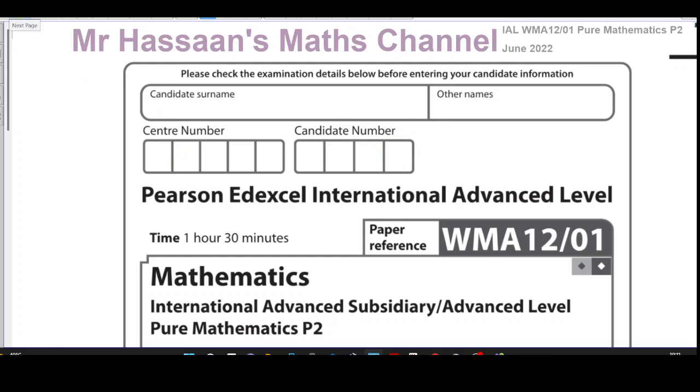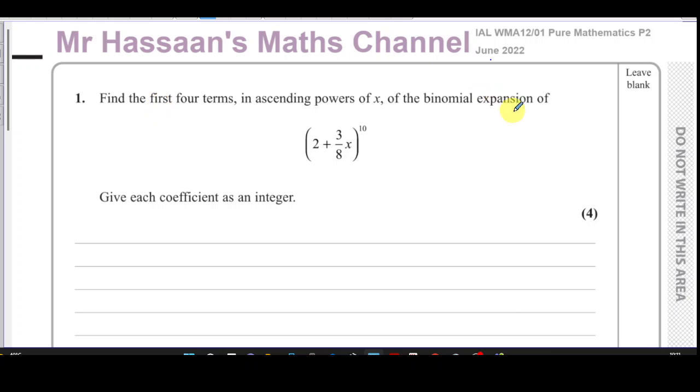I'm going to start question number one. Question number one from this paper is about binomial expansion of this expression here: 2 plus 3 over 8x to the power of 10. We got to find the first four terms in ascending powers of x of this binomial, and we got to give each coefficient as an integer. That gives us an idea that the coefficients would be integers, and if they're not, there's something that we've done wrong.